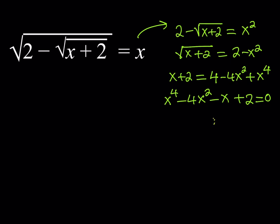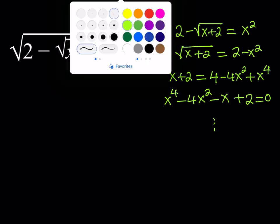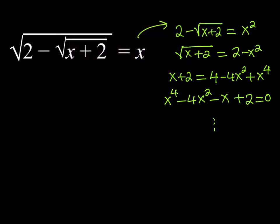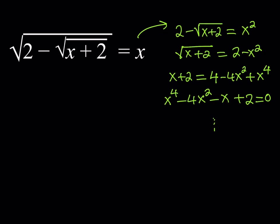Anyway, that's one path to take, but I'm going to take another path. Instead of squaring both sides, I'm going to use substitution. Squaring both sides eliminates the radical but also introduces extraneous solutions and makes the equation harder to solve.